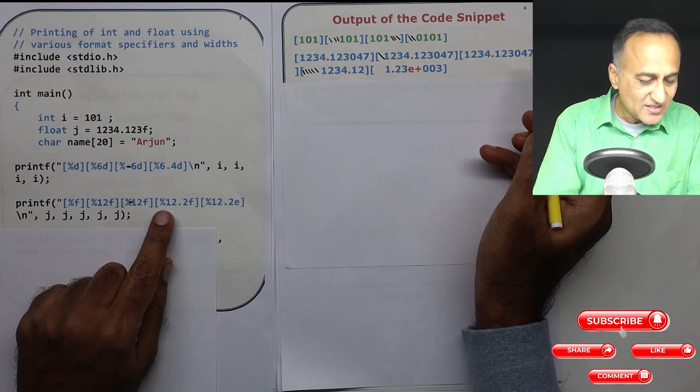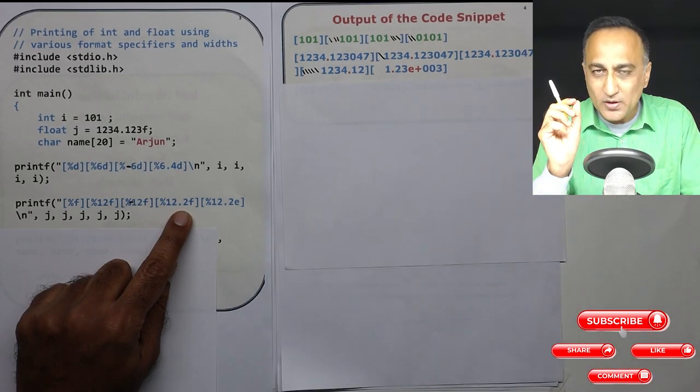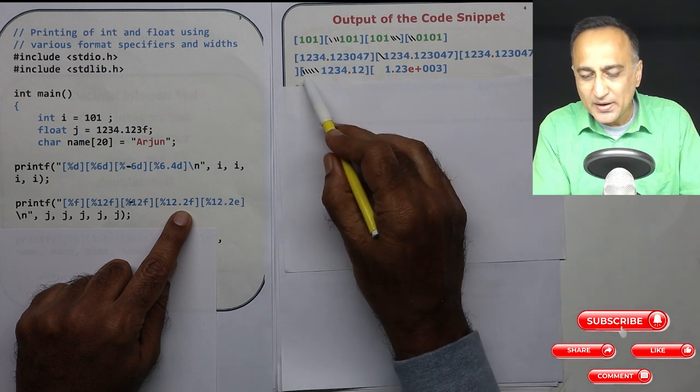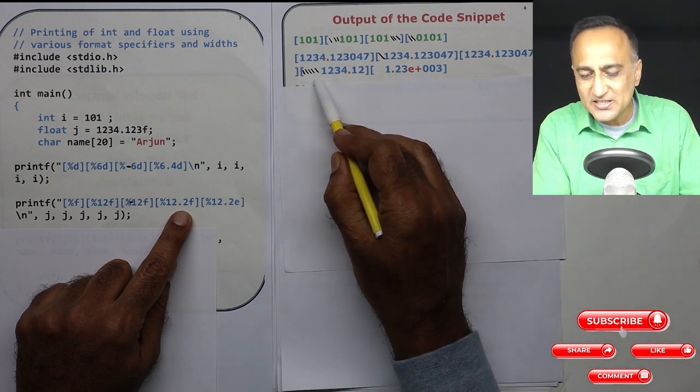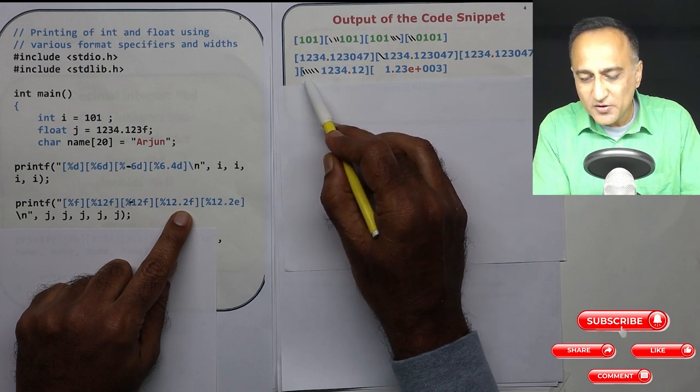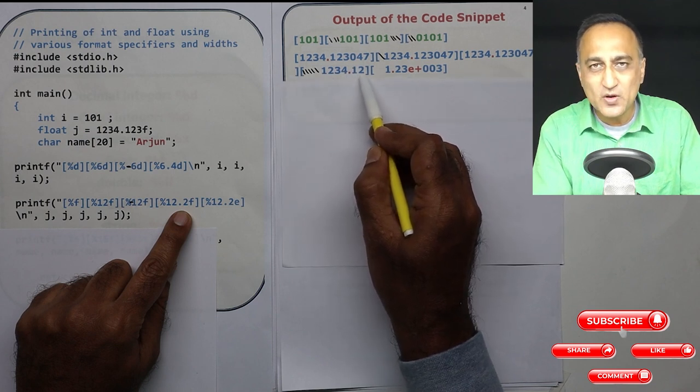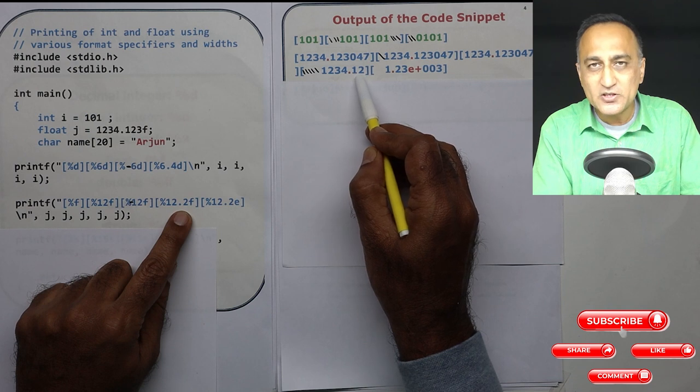Now what I have is %12.2, that means I have 12 width but I want only accuracy or precision up to two decimal places. That's why it is leaving six spaces at the beginning. It's using four spaces, so it's leaving five spaces, 5 plus 4 is 9, 9 plus 1 is 10, and after the decimal places you have accuracy or precision of two digits.